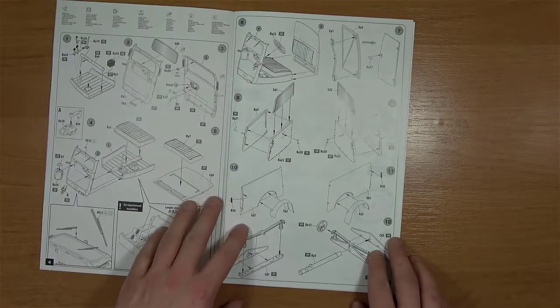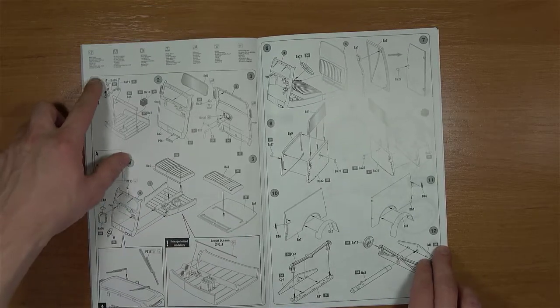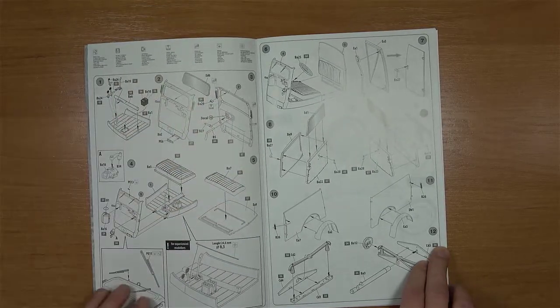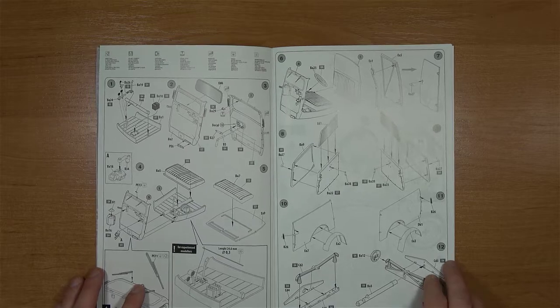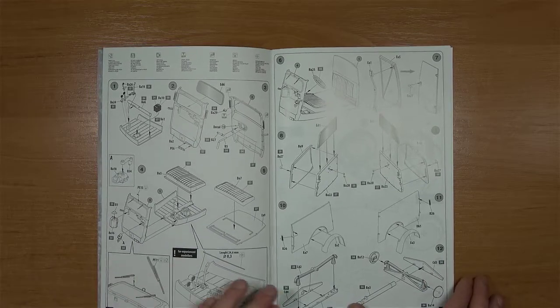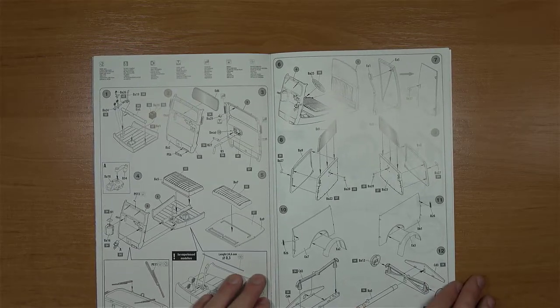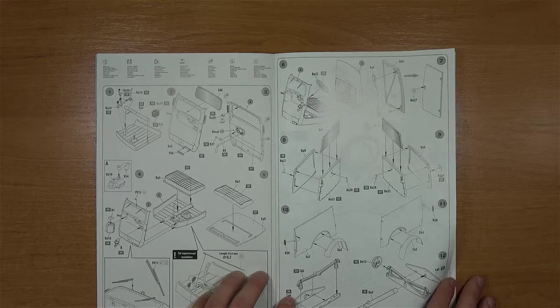Instrukcja jest przejrzysta. Mamy wszystkie potrzebne informacje, które należy - nie używać kleju na przykład, powielić coś opcjonalne.